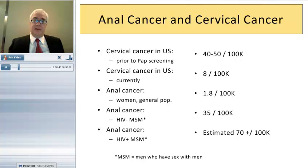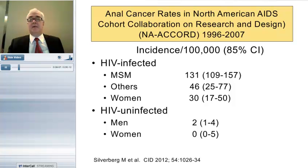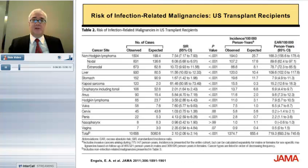Prior to antiretroviral therapy, the incidence in HIV-positive MSM was estimated at 70-plus per 100,000 — at least twice as high as in HIV-negative MSM. In the era of ART, we actually predicted the incidence would increase, and unfortunately it did. Data from the largest HIV cohort in the United States show that since ART's advent in 1996, the incidence has been 131 per 100,000 in HIV-infected MSM, and about 30 per 100,000 in women — higher than the highest incidences of cervical cancer anywhere in the world.